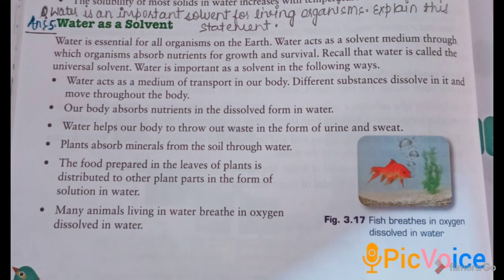Water helps our body to throw out waste in the form of urine and sweat. Plants absorb minerals from the soil through water. The food prepared in the leaves by photosynthesis is distributed to other parts of the plant as a solution in water. Many animals living in water breathe oxygen which is dissolved in water. Note down these five points from this paragraph.